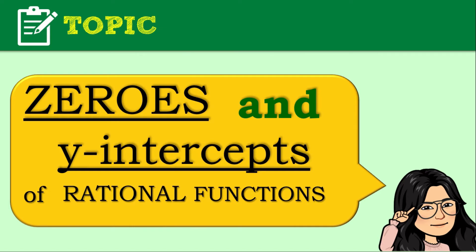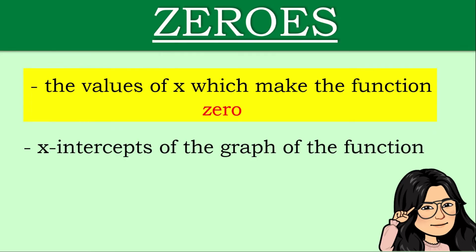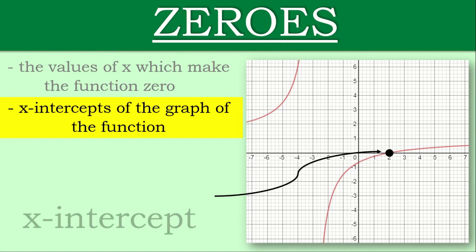How do we define each? Zeros are the values of x which make the function zero. The real number zeros are also the x-intercepts of the graph of the given function. For example, look at this graph. The zero or the x-intercept of this function is at the point where x is equal to 2 — this will make the function equal to zero. So that is your x-intercept.